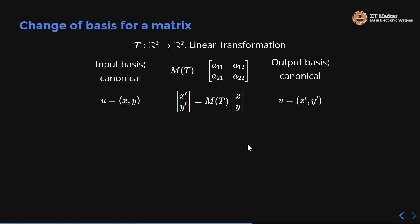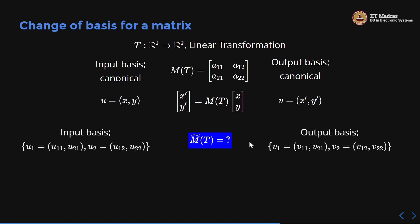Let us write it down clearly. Suppose t is a linear transformation and when both input and output bases are canonical, I have matrix m(t) = [a11 a12; a21 a22]. Now if I change to an arbitrary input basis u1, u2 with components (u11, u21) and (u12, u22), and an arbitrary output basis v1, v2 with components (v11, v21) and (v12, v22), what will m̃(t) be for the same transformation? And how is it related to m(t)?